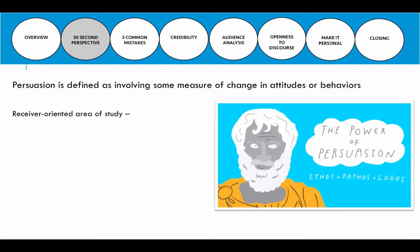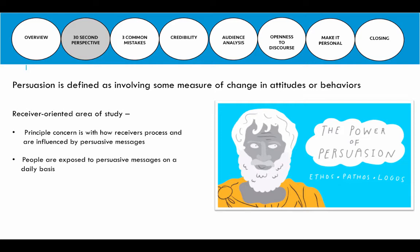Persuasion is defined as involving some measure of change in attitudes and behaviors. It's a receiver-oriented focus of study, which means that the primary concern is with how receivers both process and are influenced by the persuasive messages that they hear. Because we're attempting to change attitudes or behaviors, what we're concerned about is whether your persuasive message actually changes someone's attitudes and behaviors — making it a receiver-oriented focus of study.